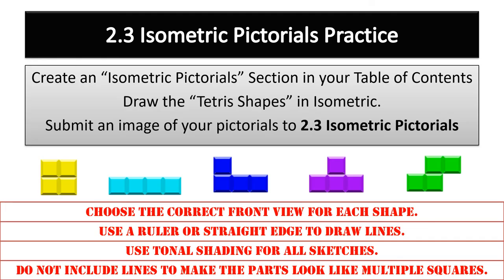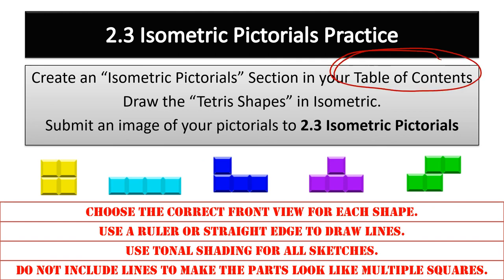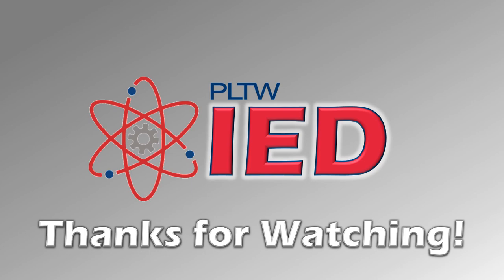So for your assignment, you're going to do the five Tetris shapes again, but now you're going to do them in isometric. So make sure you make a new isometric pictorials in your table of contents. Draw the shapes there. Take a picture of it. Submit it to the assignment. Make sure you choose the correct front view. These are all showing the front view. They show the best contour. So these should be on the left. Use a ruler or straight edge to draw all your lines. I want straight lines, not wavy lines. Use tonal shading. It's required to get full points. And do not include these lines. I don't want to see this. This just clutters up the image. I want it to just be one solid piece. So you don't draw those lines to make them look like boxes. And that's about it. Thanks for watching and have a great day.